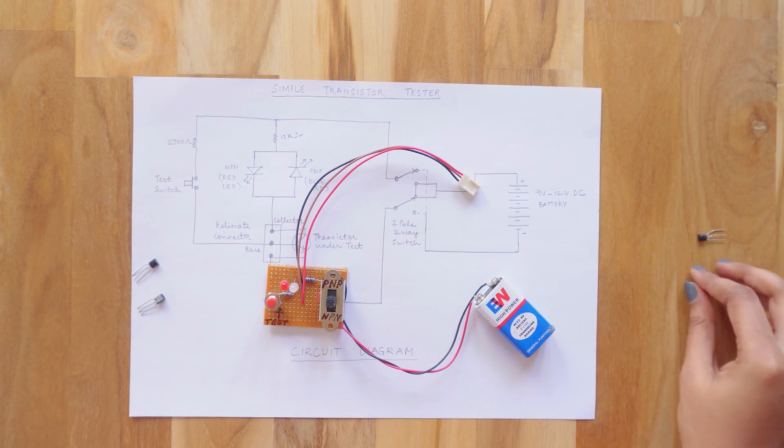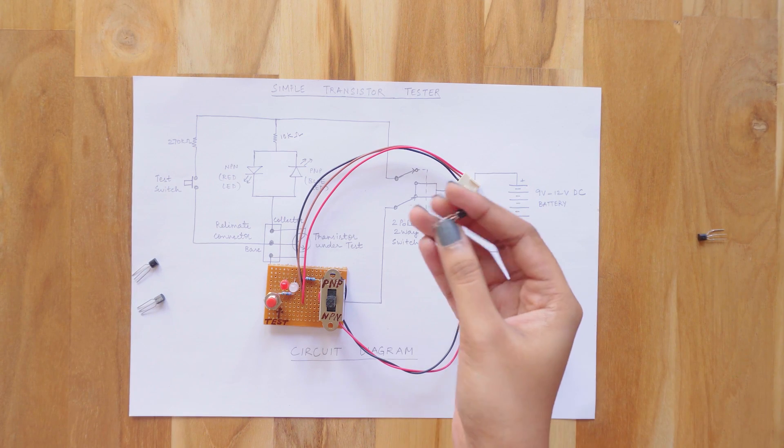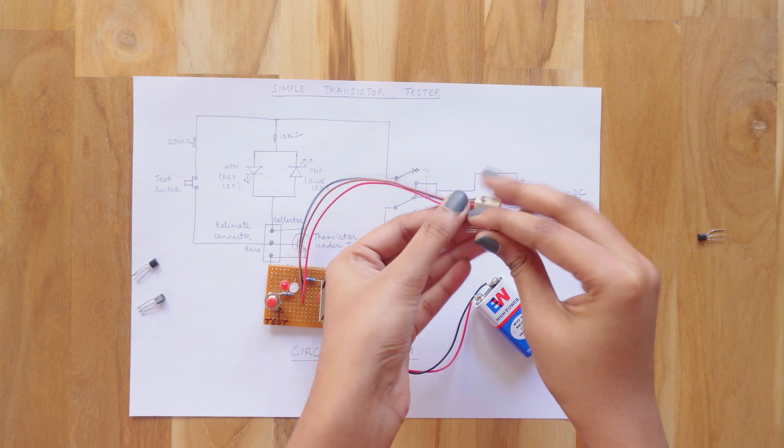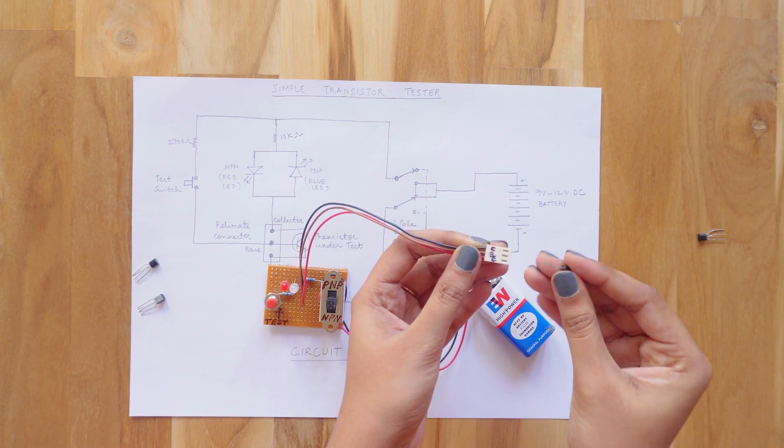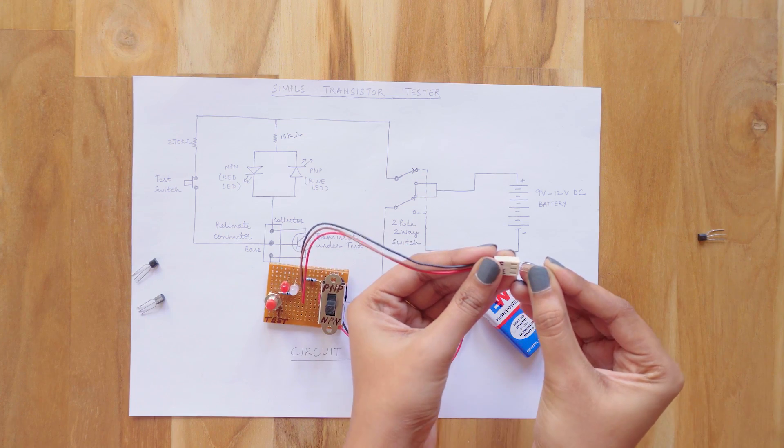Now let's check this transistor. I've taken two faulty transistors from a PCB in which one is a short-circuited one and the another one is an open circuit just to show you that this circuit also identifies faulty transistors. Now let's place it in the connector.